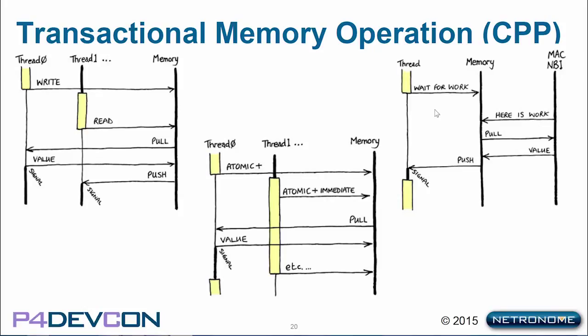Thread1 also has atomic plus immediate — in the command and the transaction, you say 'I want you to do an add, and the number is one.' You give it this immediate value because it's small — you don't need to pull the data. The memory can then just combine the data given in the command with memory. In this case the thread can just keep running. If threads need data pulled and pushed, they will stop execution until the data is gathered or returned. You can see on the thread lines that they get thick black when ready to run, thin when waiting. Thread1 is ready to keep going after the atomic plus immediate — it doesn't need to wait.